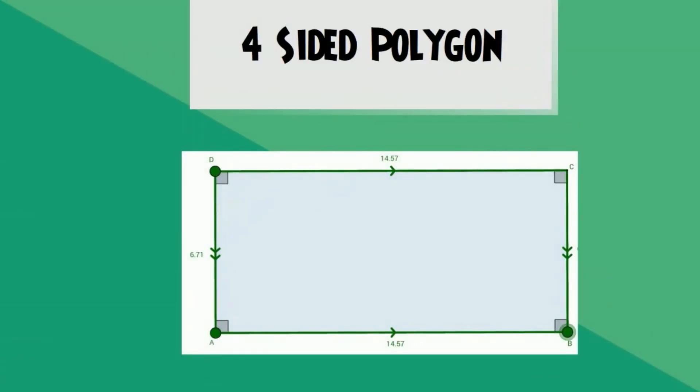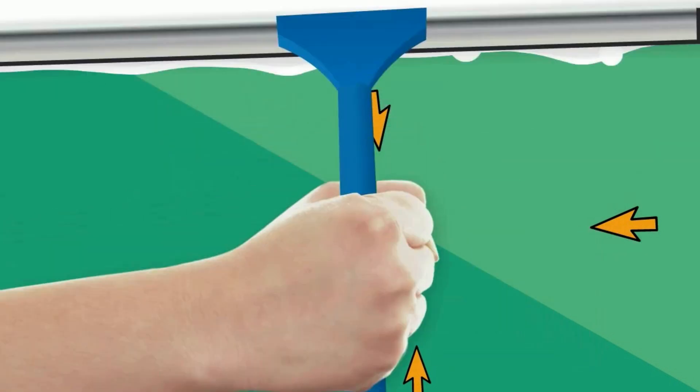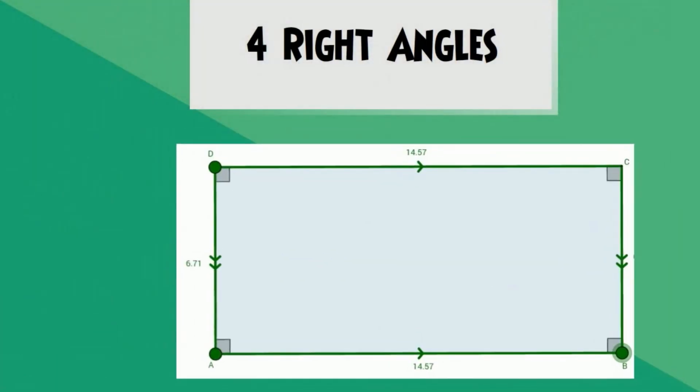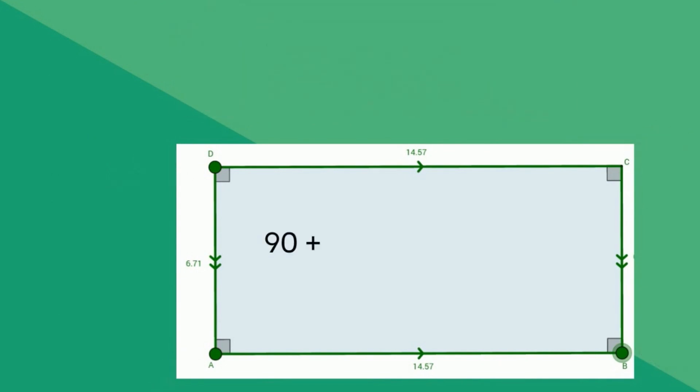A rectangle is a four-sided polygon with opposite sides being parallel. In addition, a rectangle has four right angles, and the sum of these interior angles adds to 360 degrees.